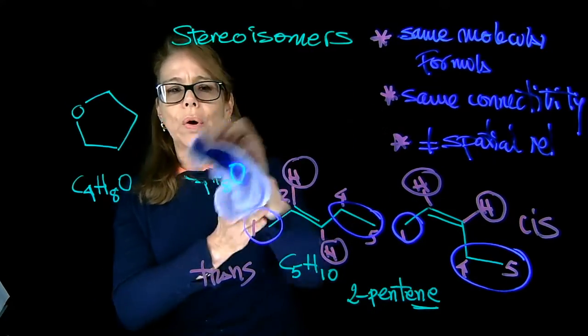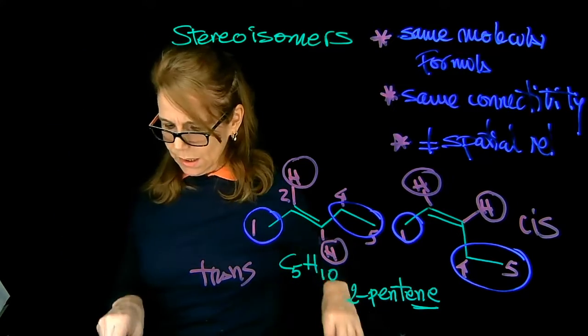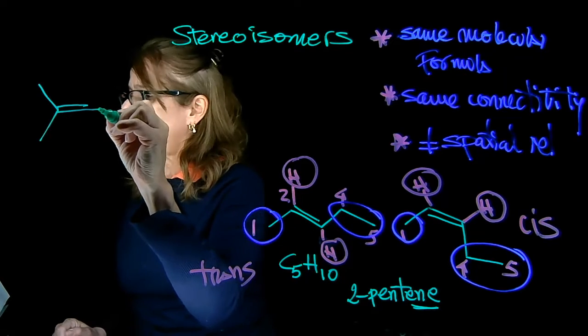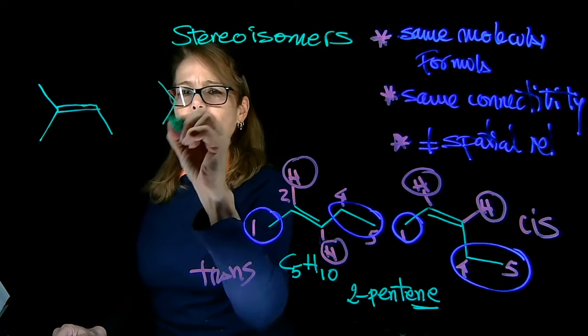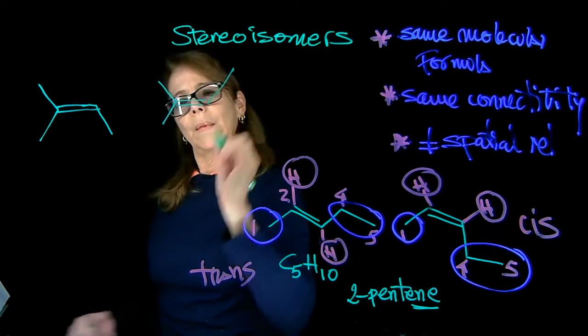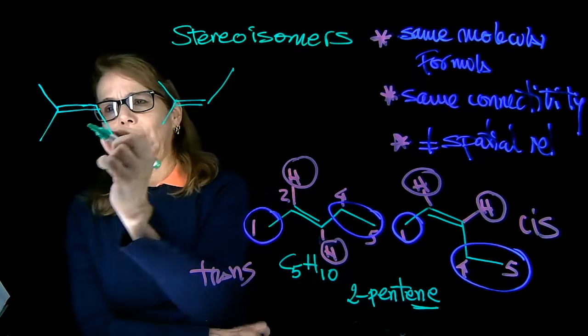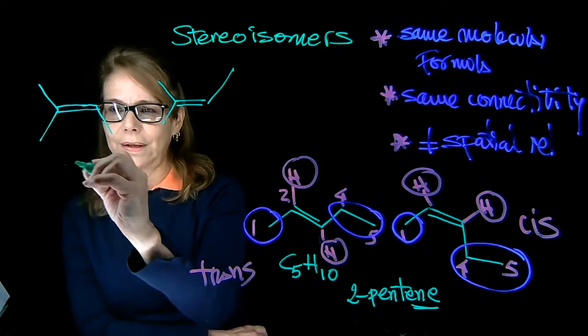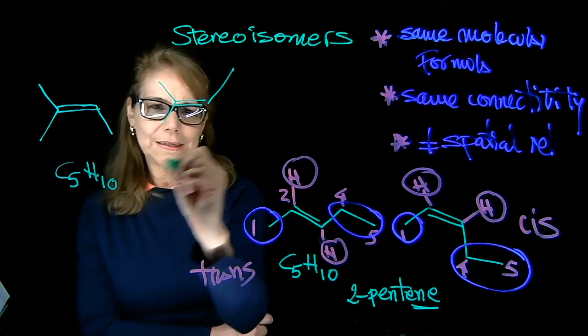One more couple of molecules here, another example. And see, I have now, let's do these two drawings. And this drawing. Well, they might look different, right? Let's see what happens. So here we have 1, 2, 3, 4, and 5. So that is C5H10. Same thing here.